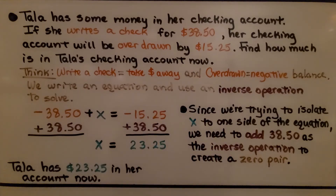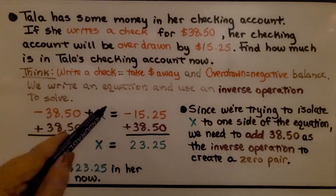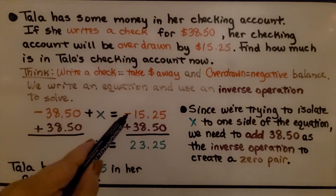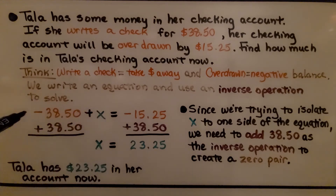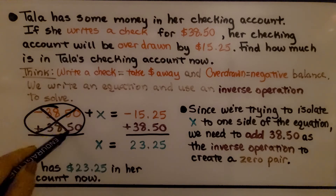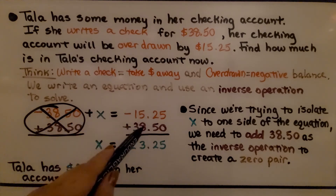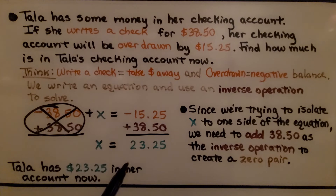We write an equation and use an inverse operation to solve it. We have negative $38.50 plus x equals negative $15.25. To isolate x, we add $38.50 to each side of the equal sign, creating a zero pair. We are left with x on one side, and on the other side we get positive $23.25. Tala has $23.25 in her account before she wrote the check.